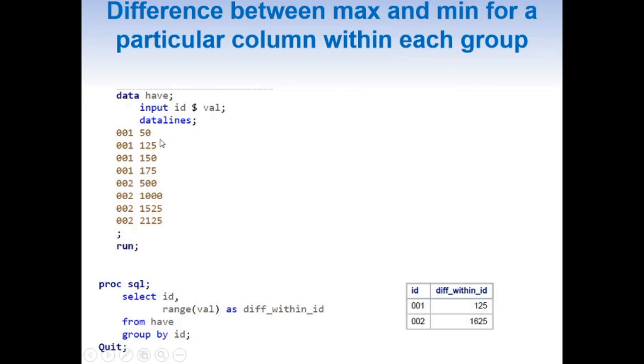Here we have our sample dataset again, with an ID column. We're going to use this ID column as our group, and we're trying to find the difference between max and min values for the val column for each ID.